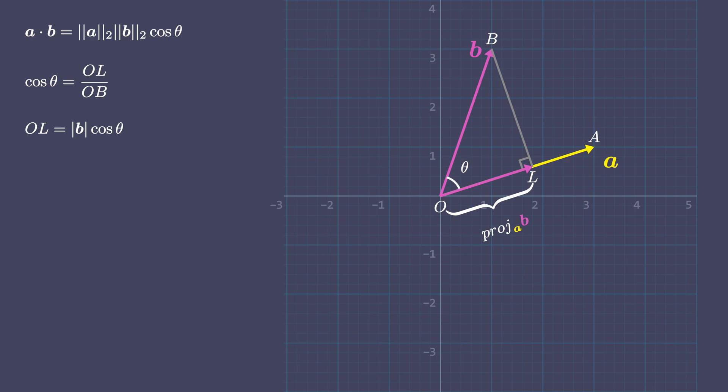So A dot B can be written as magnitude of A times length of OL, and now it should be clear after substituting OL equals B cos theta, why the dot product is given by AB cos theta.